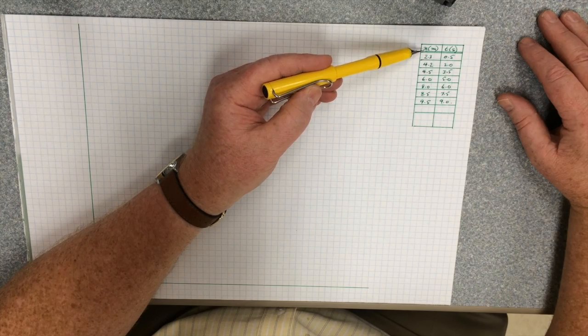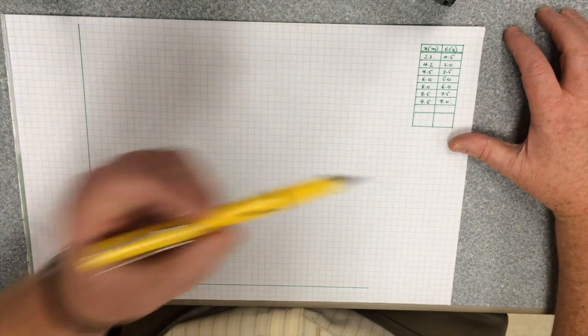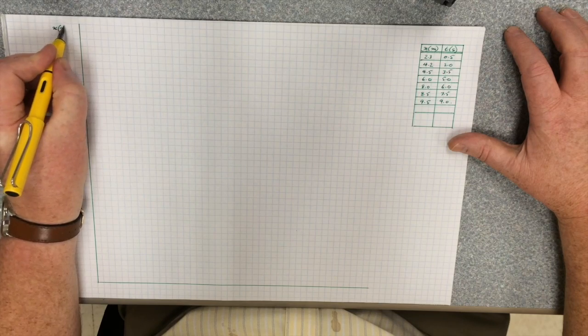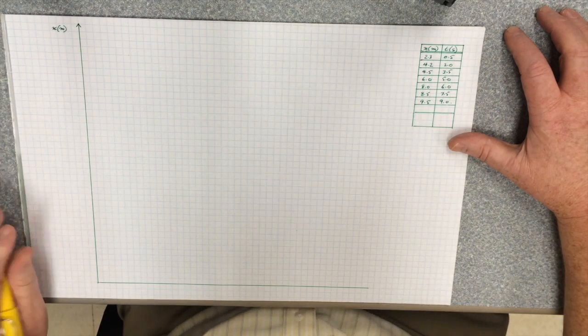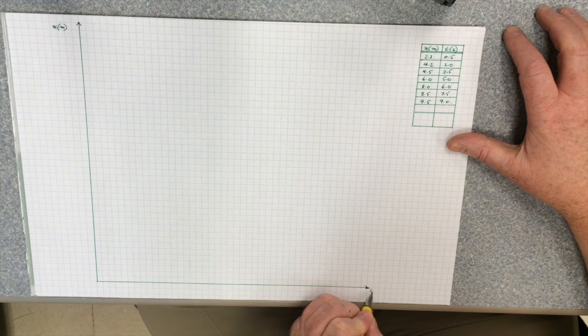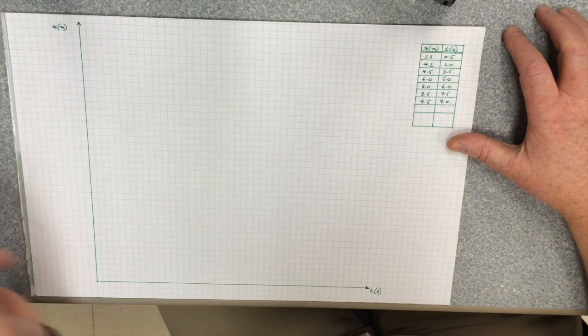So what I'm going to do is put the x values on the vertical axis. I'll go over here and label that x in meters and put a little arrow up the top. And over here, I'm going to call this the time axis, t, and I'll put seconds down there.